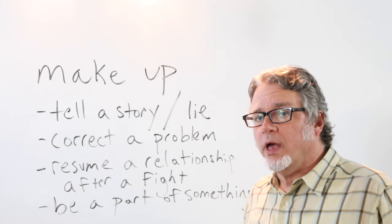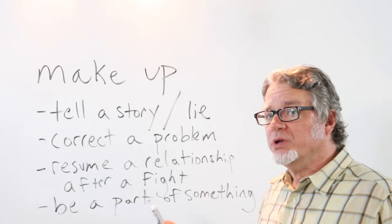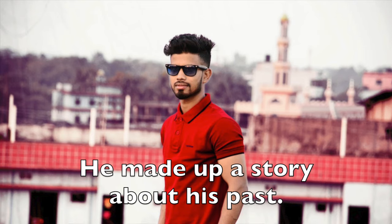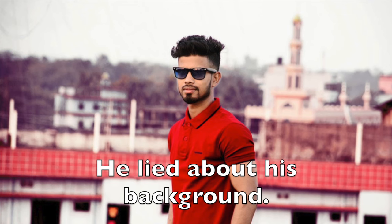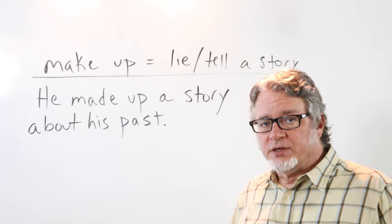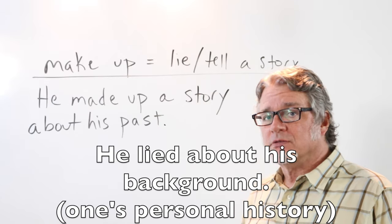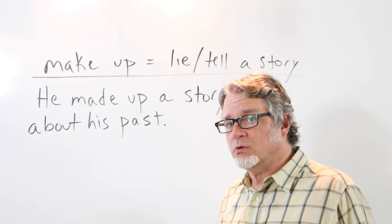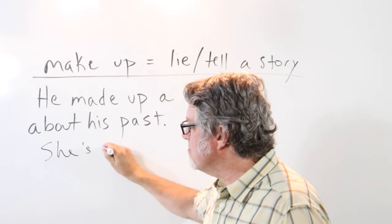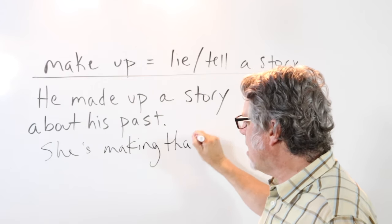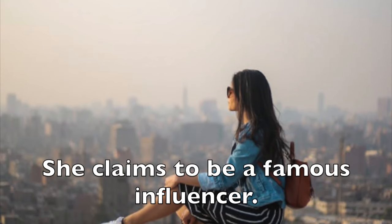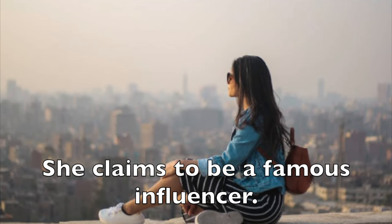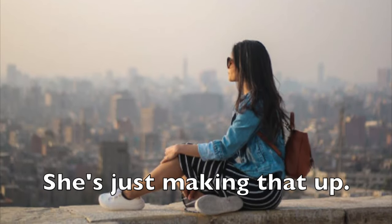Use 'make up' when a person tells a story which is actually a lie of some kind. He made up a story about his past — he lied about his background; what he said was not true. She's making that up; she's not telling the truth. She claims to be a famous influencer — she's just making that up.